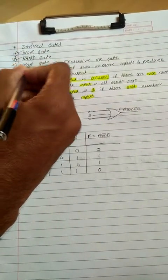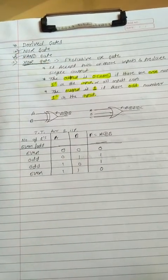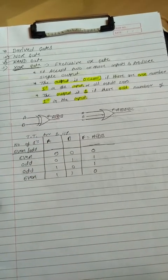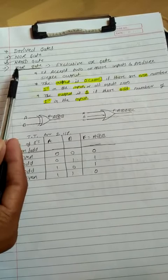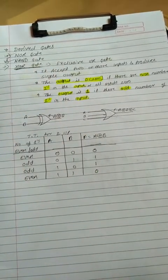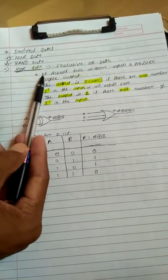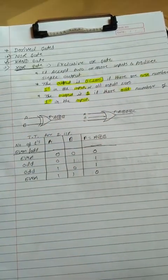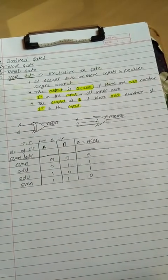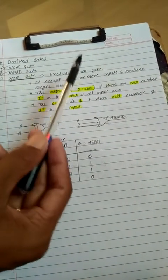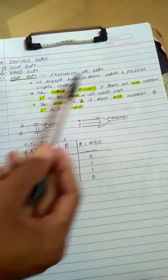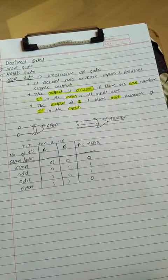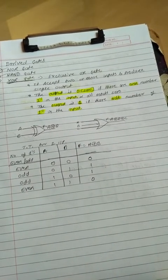So today, the third one — that is the XOR gate. We are going to discuss about XOR gate. This XOR gate is also called as an exclusive OR gate. It accepts two or more inputs and always produces only one output signal. This XOR gate is also an electronic circuit gate. It is a little bit different than other gates.